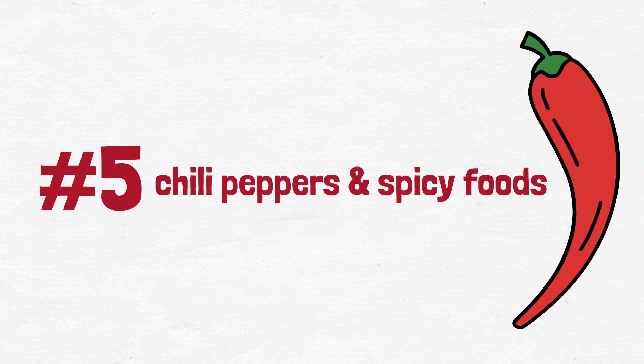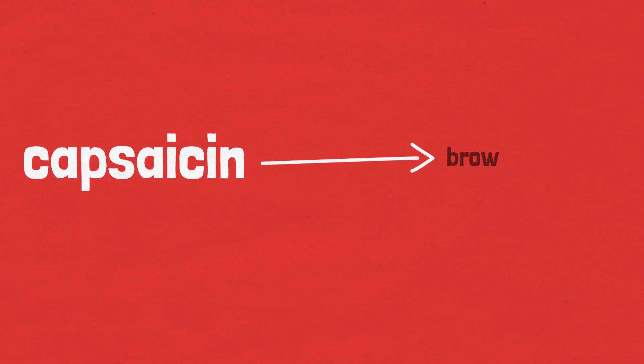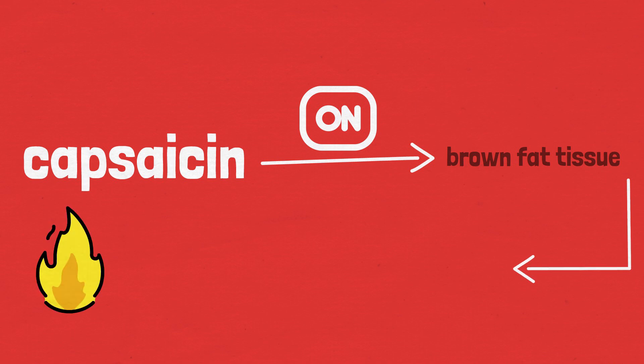The next thing you can do is eating chili peppers and spicy foods. There is a substance called capsaicin in pepper that activates brown fat tissue. This tissue produces heat by consuming fat and increases metabolism.